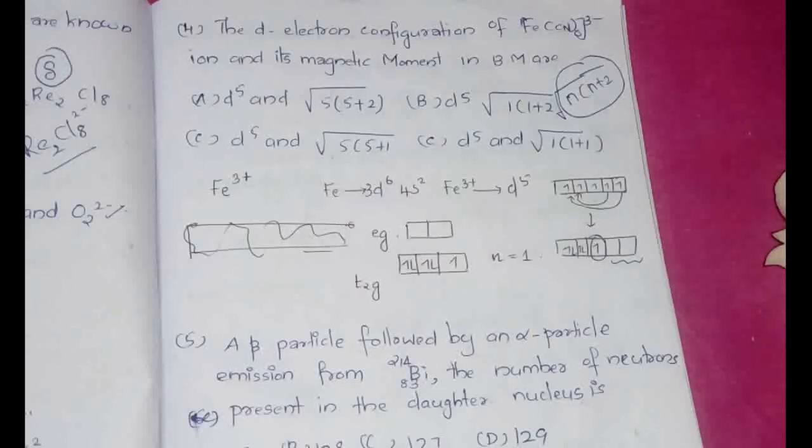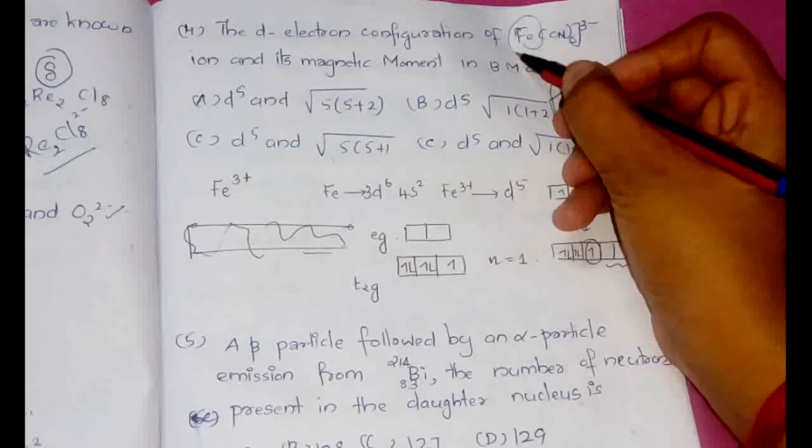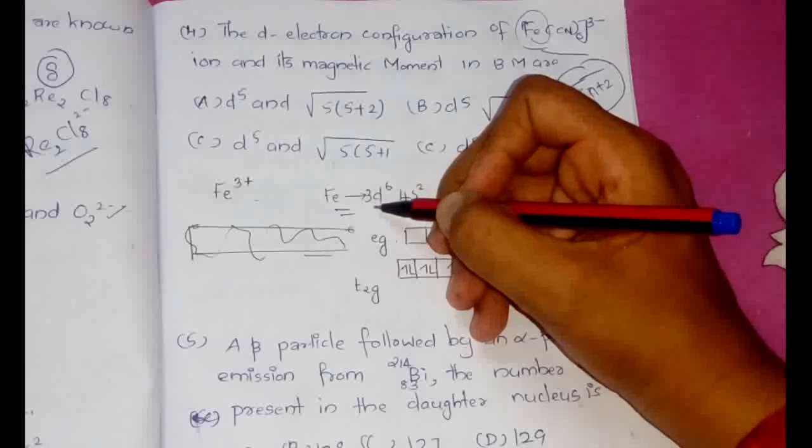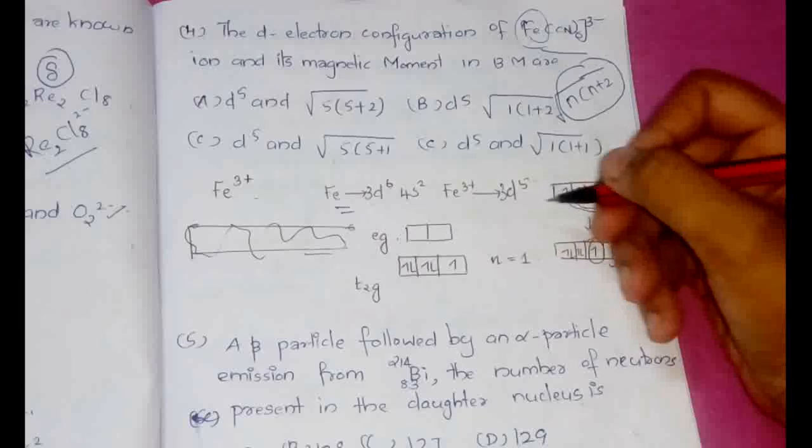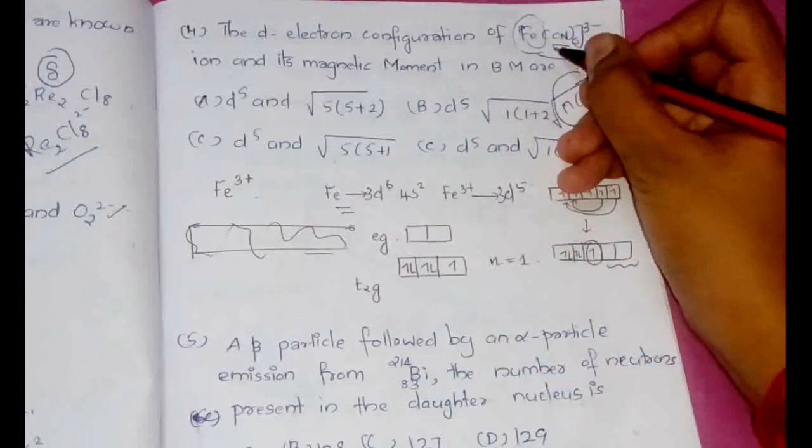So what is the thing you have to know is whether the ligand, that is CN, whether it is a strong ligand or weak ligand. If it is a strong ligand, it will cause pairing of the electrons. And as a result, the number of unpaired electrons will change. So let's go stepwise. The oxidation state of iron in this particular complex is Fe 3+. The configuration of Fe is 3d6 4s2, so Fe 3+ will be 3d5.